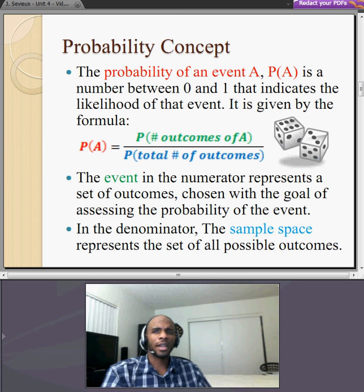The probability of an event A, denoted P of A, is a number between 0 and 1 that indicates the likelihood of that event. It is given by the formula P of A equals the probability of the number of outcomes of A over the probability of the total number of outcomes.